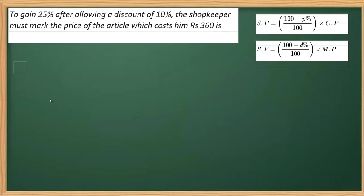Continuing with more questions of comparing quantities. In this question, to gain 25% after allowing a discount of 10%, the shopkeeper must mark what price? So the mark price is what we have to find out, which cost him—that is, CP is given—360 rupees. As I told you in the previous video.